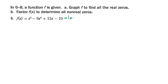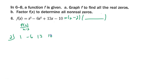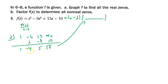I'll use synthetic division to divide f(x) by x-2. Put 2 in the box with coefficients 1, -6, 13, -10. Bring down 1; times 2 is 2; plus -6 gives -4; times 2 is -8; plus 13 gives 5; times 2 is 10; plus -10 gives zero remainder. So the resulting polynomial is x² - 4x + 5.